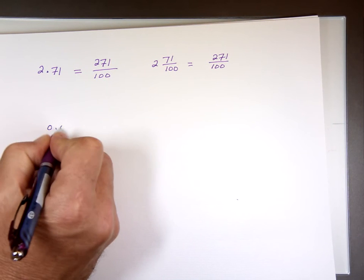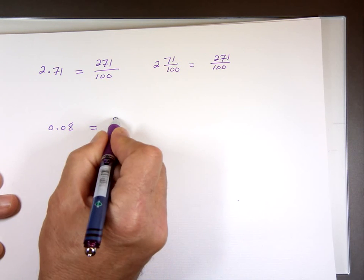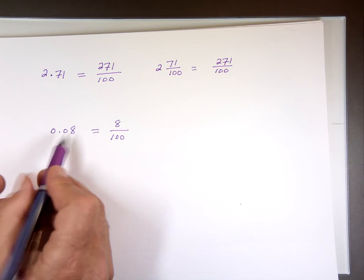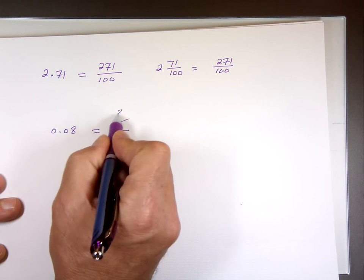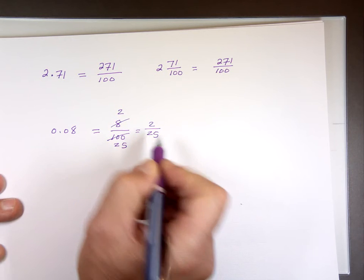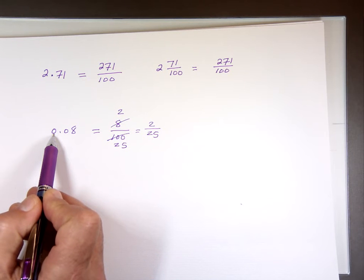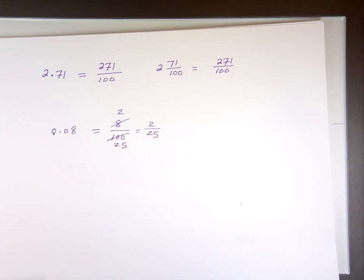0.08. Well, this is what? 8 over 100. Two digits, two decimal places. We can divide by 4. That's what? 2. 25. You can't really write that as a mixed number because you don't have. To be a mixed number, that digit to the left of the decimal point has to be more than 1. Or 1 or more. More than 0. 1 point something. But it can't be a 0. That means you don't have a whole value there. So, that's how we change from decimals to fractions.